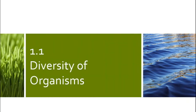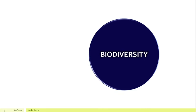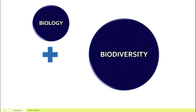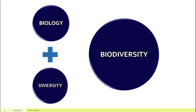The first topic that we are going to look at is the diversity of organisms. Before we even start, there is one very important word that you have to understand, that is biodiversity, the title of our chapter. In order to understand this word, I would like to break down this word into two very different words, that is biology and diversity. These two words joined together become biodiversity.